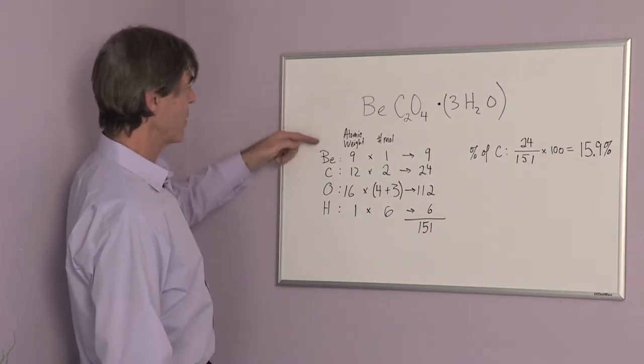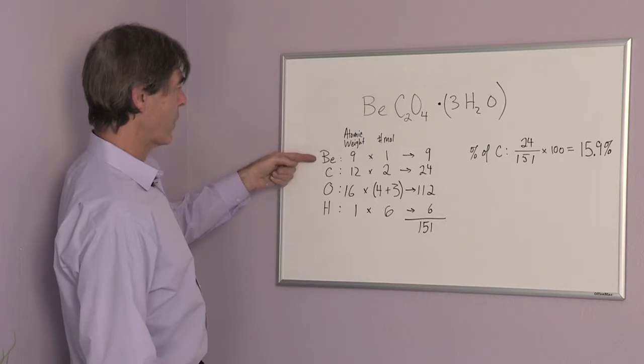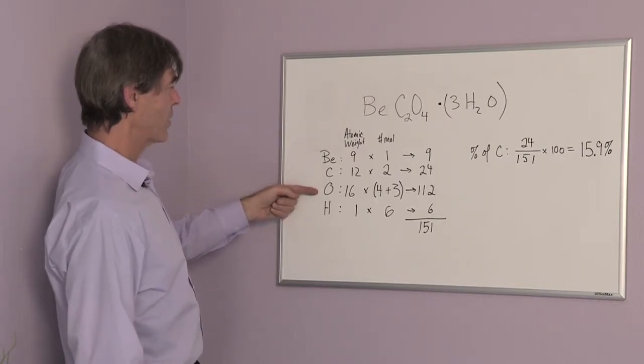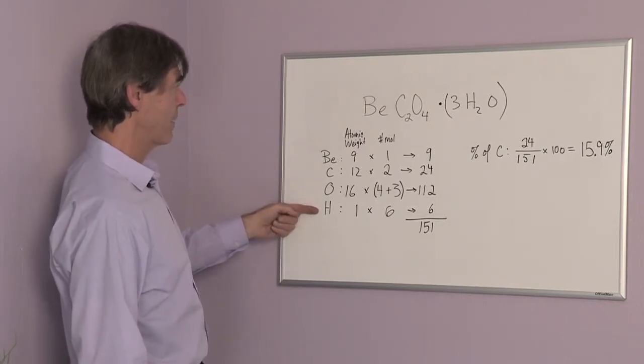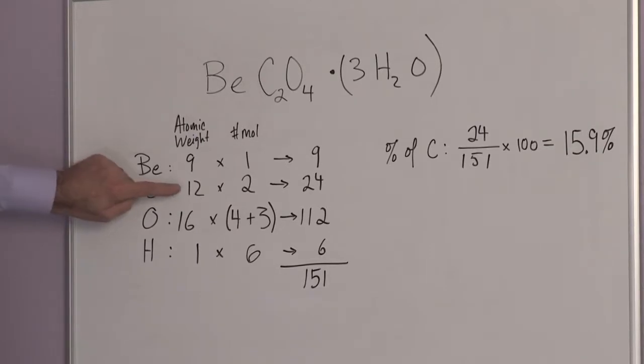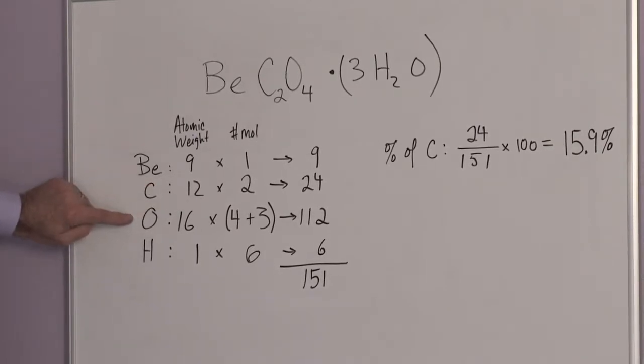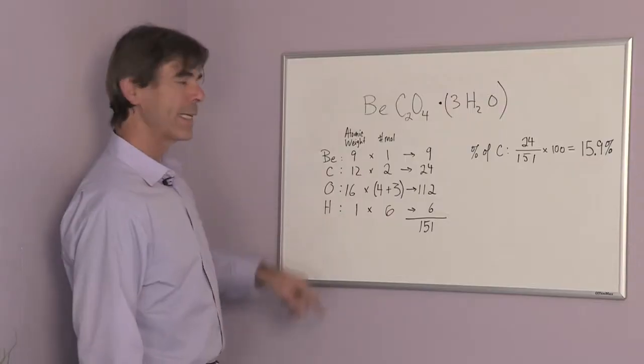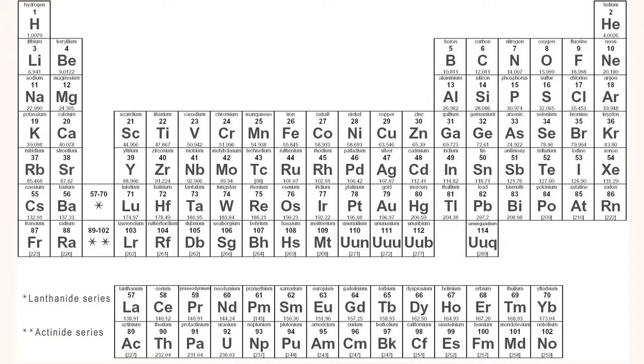So let's first of all look at the ingredients. We have beryllium, carbon, oxygen, and hydrogen. And the atomic weight of each: for beryllium, nine; carbon, 12; oxygen, 16; and hydrogen, one. We can get this information from a periodic table.